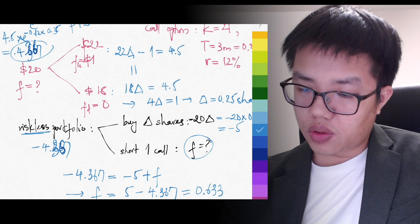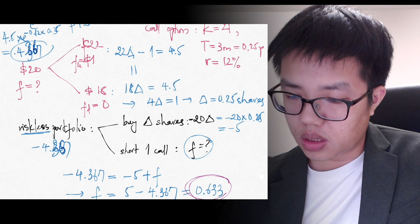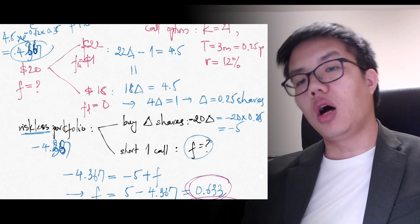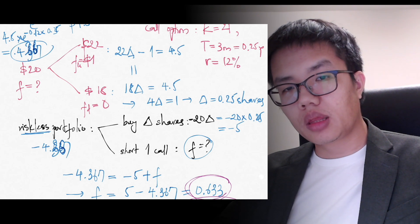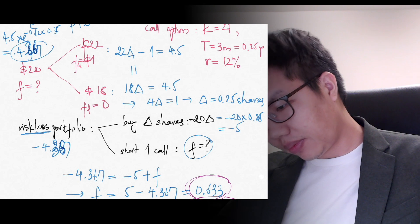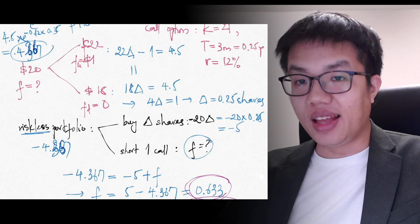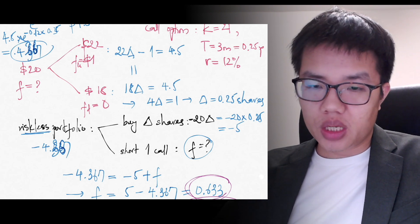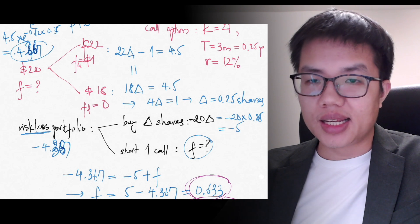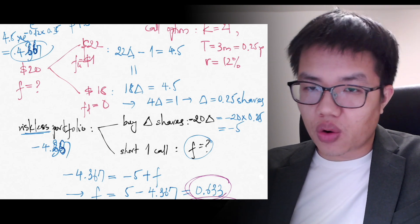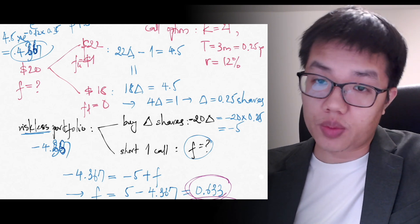So f = 0.633 is our option value today. This process is called the riskless portfolio or no-arbitrage approach to identifying the option price. Please read through this example again to understand the idea. In the next lecture, we will generalize this example into a simple formula to identify the call option price.